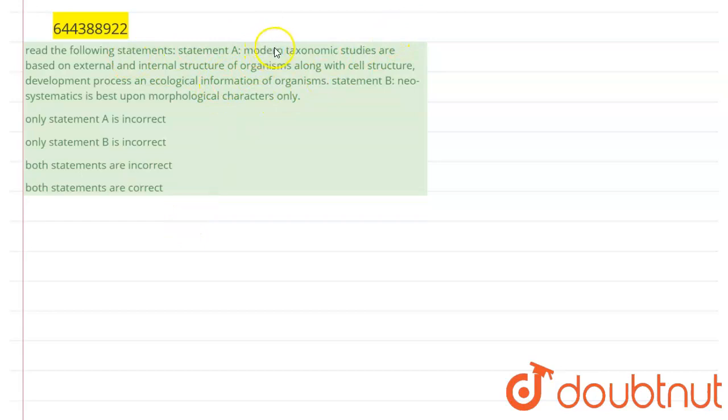The first statement given is: modern taxonomic studies are based on external and internal structure of organism along with cell structure, development process, and ecological information of organism.